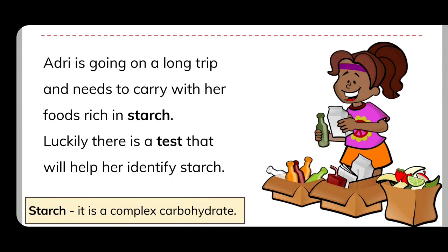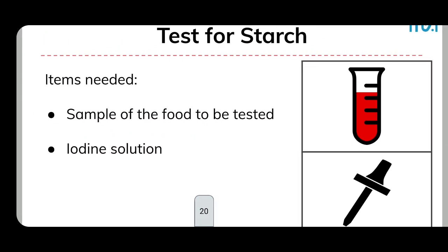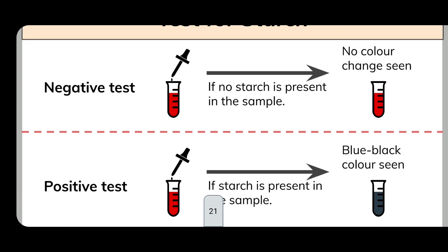Test for starch: take a sample of the food to be tested. Add iodine solution. If there is no starch present in the sample, that is a negative test — no color change is seen in the iodine solution. If starch is present in the sample, that is a positive test — the iodine solution turns blue-black in color.